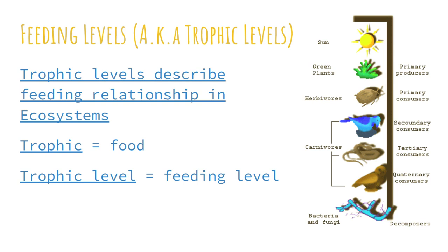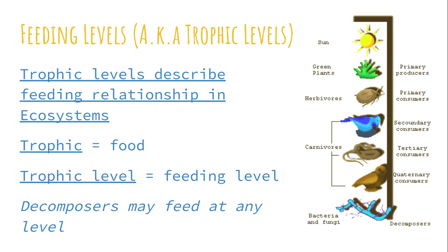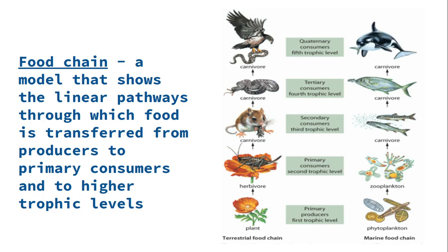Trophic levels look at a food chain and describe the relationship of where organisms are relative to their feeding order. 'Trophic' means food, so trophic level means feeding level. The sun is not a trophic level itself — our first trophic level is the primary producers, because they are the first level making food from the sun's energy. As we go up the food chain: trophic level one, two, three, four, five, and so forth. Decomposers like bacteria fall outside this sequence as they act everywhere.